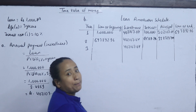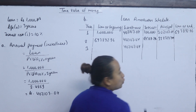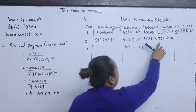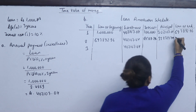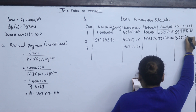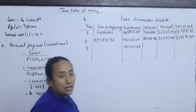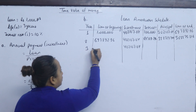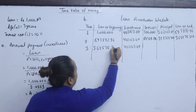Now, what is the principal for year 2? The principal is the installment minus the interest. The ending balance after year 2 is 697,892.96 minus 332,317.744, giving a loan balance of 365,575.216.